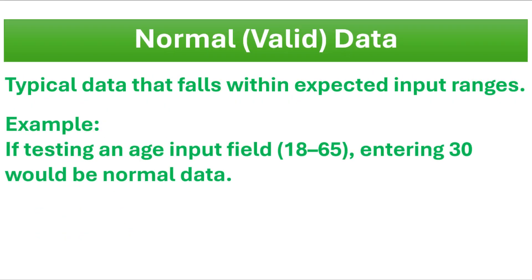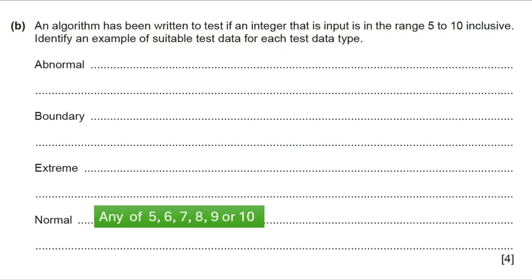First of all, normal or valid data — typical data that falls within expected input ranges. For example, if testing an age input field with a range from 18 to 65, entering 30 would be normal data. For this question, any value between 5 and 10 will be the normal test data — it can be any of 5, 6, 7, 8, 9, or 10.